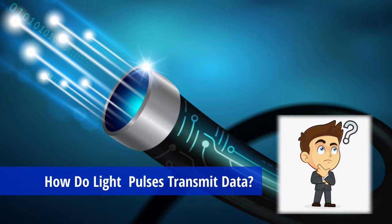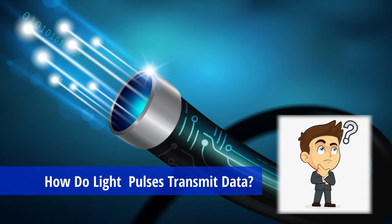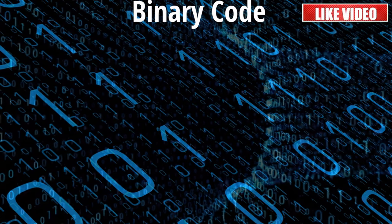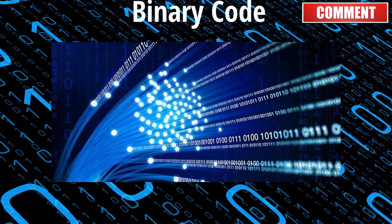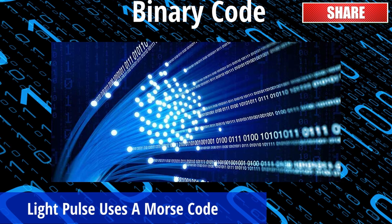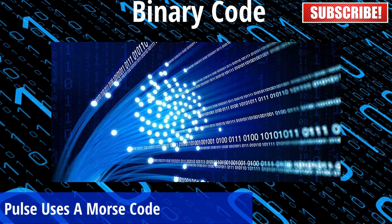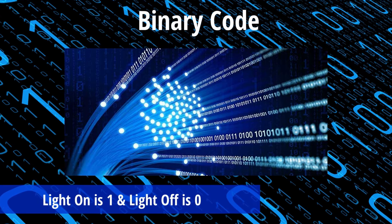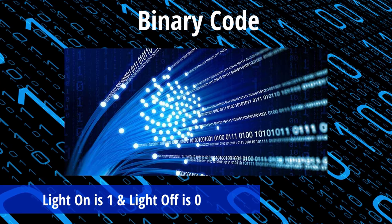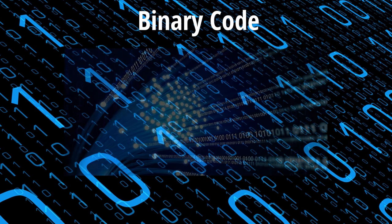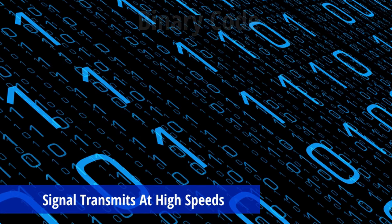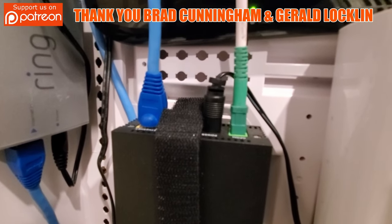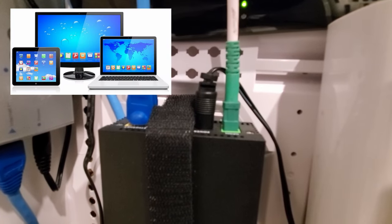So how do these pulses of light transmit data? Everything to do with computers is transmitted through binary code — zeros and ones. The light pulse transmitted down the fiber optic cable uses a morse code-like system to represent the binary system of zeros and ones. For example, light on represents one and light off represents zero. These pulses are transmitted at extremely high speeds. Once that signal gets to your fiber optic modem, the modem converts the optical signal into a digital signal, which is then sent to your computer or devices.